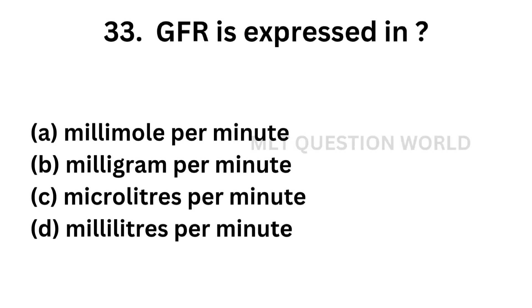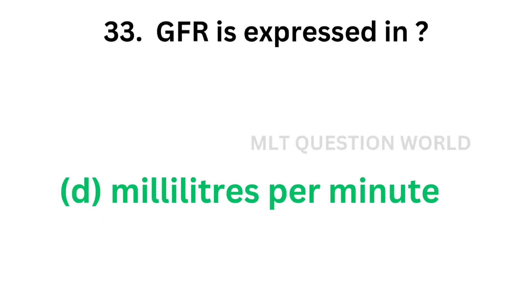Question number 33: GFR is expressed in — option A: millimoles per minute, option B: milligrams per minute, option C: microliters per minute, option D: milliliters per minute. The correct answer is option D, milliliters per minute. GFR is expressed in milliliters per minute; 127 ml per minute is normal.